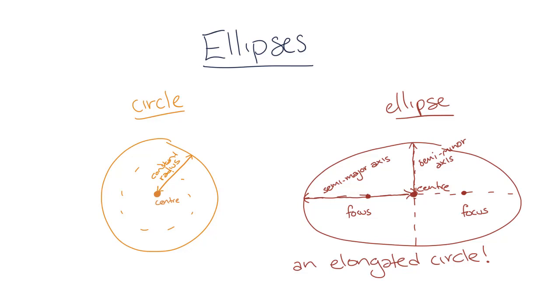And it turns out circles are actually a special case of ellipses and have an eccentricity of 0. In circles, the semi-major axis is equal to the semi-minor axis, which gives us a constant radius.